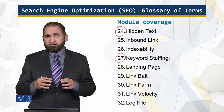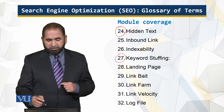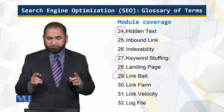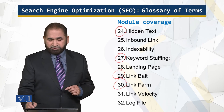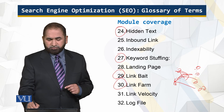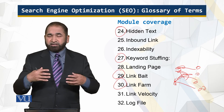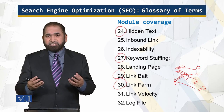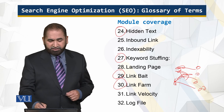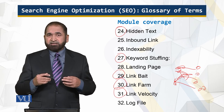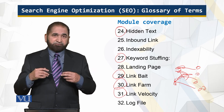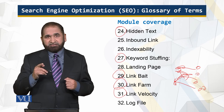Link bait is similar to clickbait — it promises something that is not there. A link farm is a group of sites all linking to each other in hopes of falsely inflating their popularity. Link velocity is how fast a site is getting linked; if link velocity is very high, it is a sign of spam.